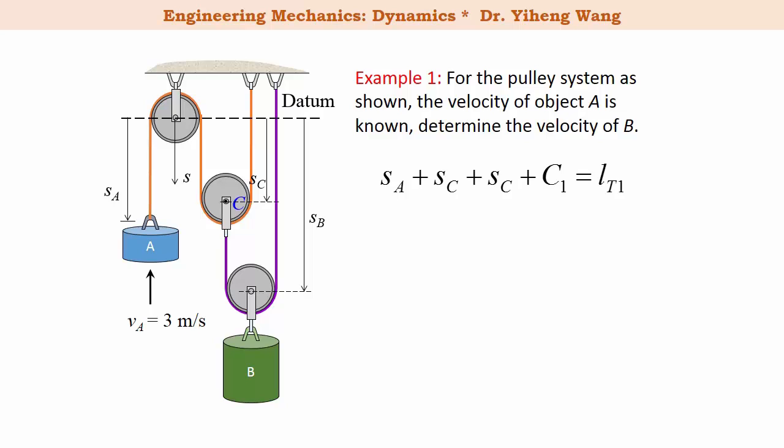And then for the second rope, the purple one, its total length equals to SB minus SC, plus SB, and then plus some constant length again, and that equals to the total length LT2.